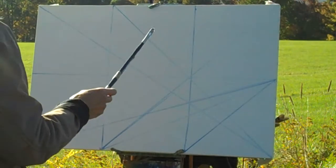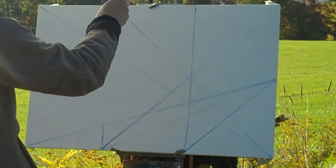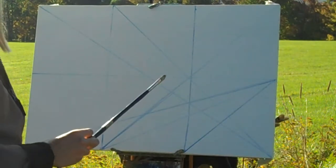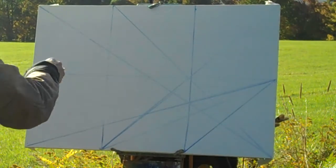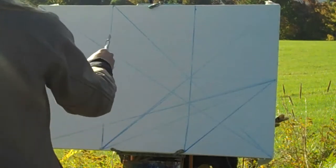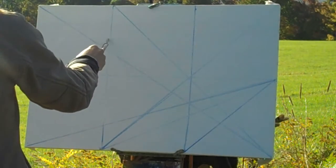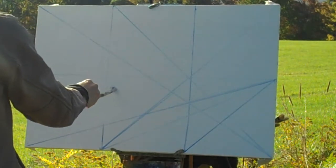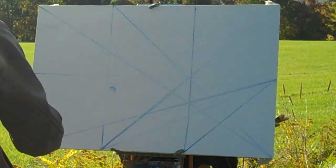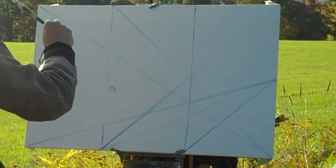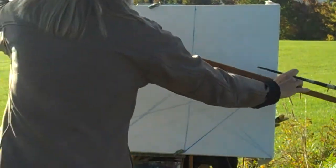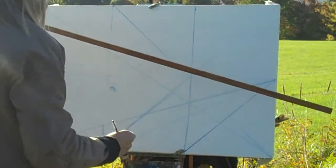One thing that interests me is that there's a tree on the left side that sort of stands out by itself, and I'm considering putting it on one of the rabatment lines. My hill is also moving in the direction to the right, and I want to make sure that I get that feeling.